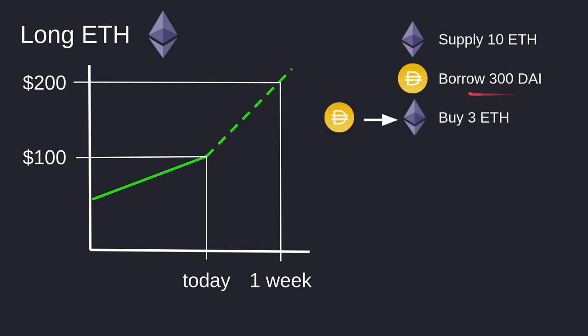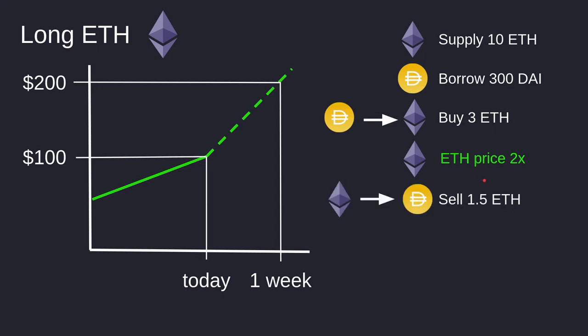Next I'm going to take this 300 DAI and immediately sell it for more ETH. ETH is 100 today, I have 300 DAI, so I'll get back 3 ETH. One week from now, my prediction was correct — the ETH price went up. The price of ETH doubled, so now it is 200 per ETH.